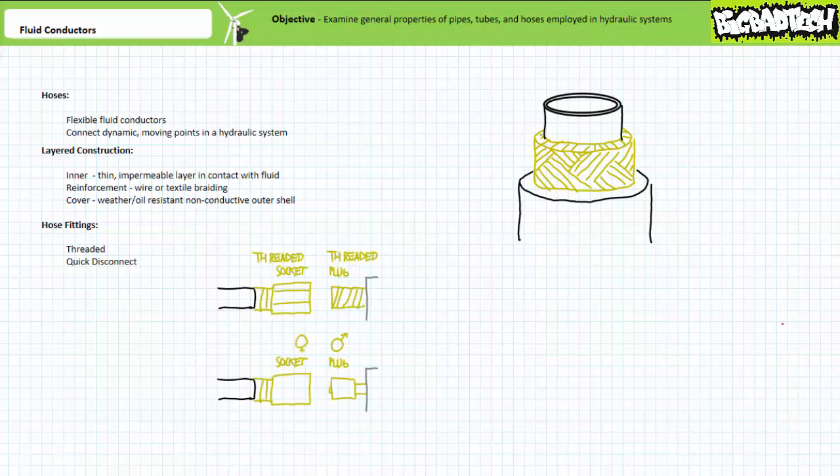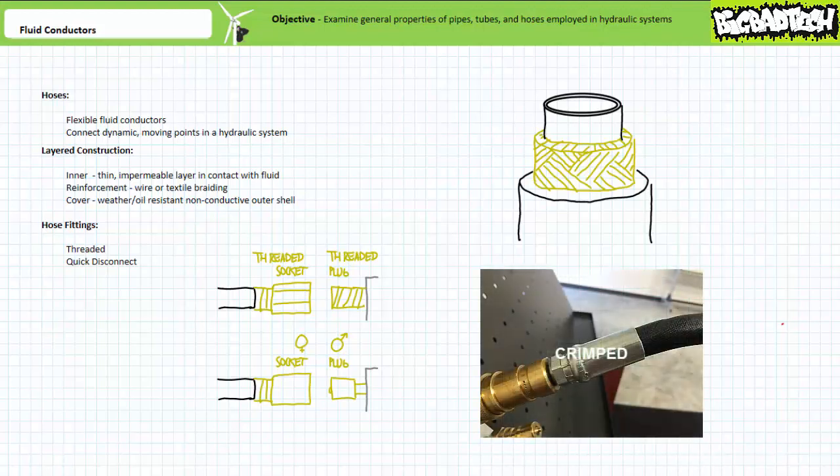Hoses use two different means of connections, threaded or quick disconnects, both of which are crimped or deformed to grip the hose and provide a seal.